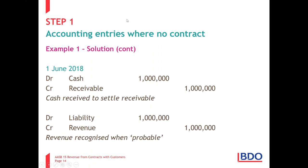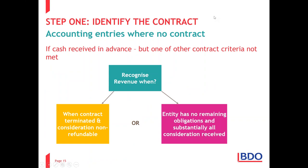From IFRS 15: if cash is received in advance but we do not meet some of the other contract criteria, even though we receive the cash, we cannot recognize the revenue. I cannot overemphasize that cash receipt does not equal recognition of revenue. The day we receive cash does not automatically mean we recognize revenue — we have to apply the five steps. There's a misconception that if you receive cash upfront and it's non-refundable, you recognize revenue at that stage. That is incorrect.